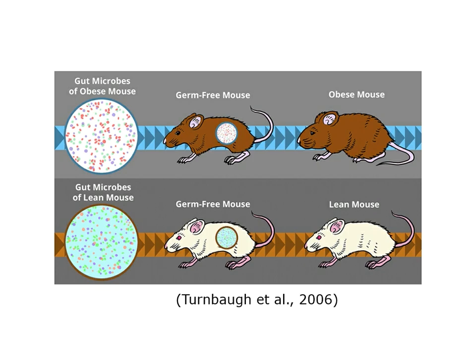When this was carried out, the germ-free mouse given gut microbes from an obese mouse then itself developed obesity — it became obese. When a germ-free mouse was given the gut microbes of a lean mouse, that germ-free mouse remained lean. These experiments are carried out in a very carefully controlled environment, so that all factors are constant and controlled for, with the only difference being the gut microbes transplanted — whether they came from a lean or an obese donor mouse. The transplantation of the obese mouse microbiome resulting in obesity suggests that the microbiome could play a big role in the development of obesity.